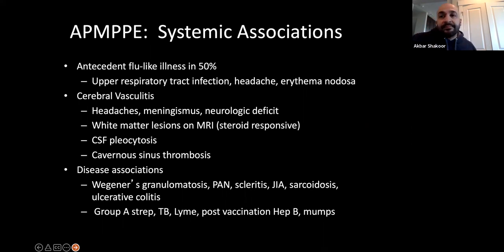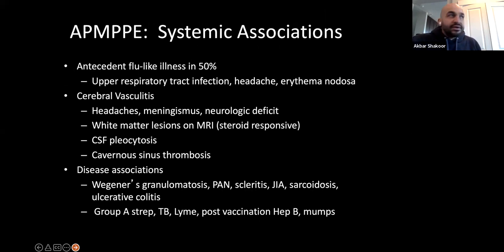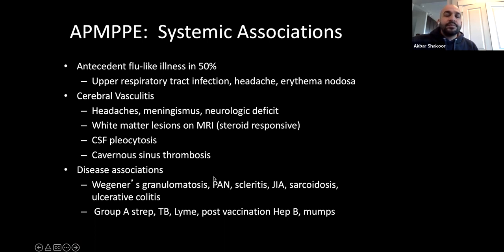If you have headaches, meningitis, or neurologic deficit with APMPPE, immediately get an MRI and consider a cerebral angiogram and treat with steroids. There is an association with Wegener's, polyarteritis nodosa, sarcoidosis, and ulcerative colitis.